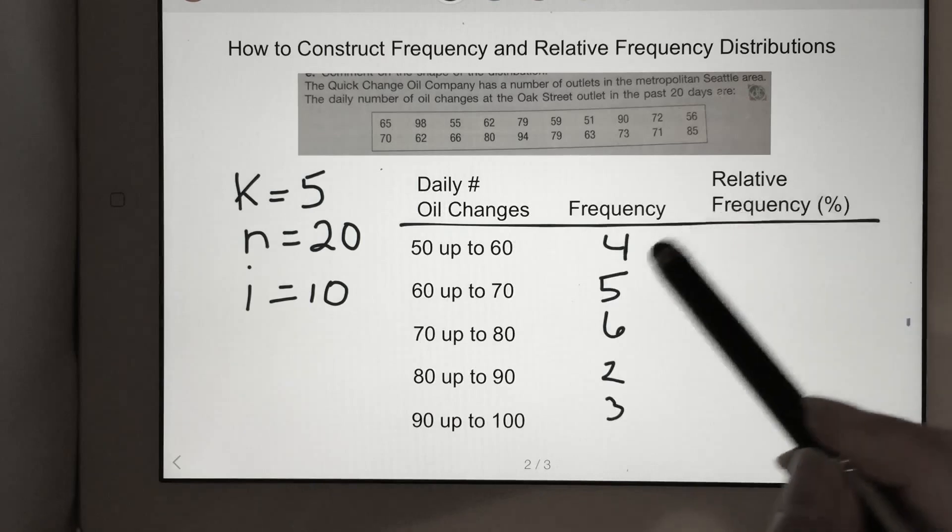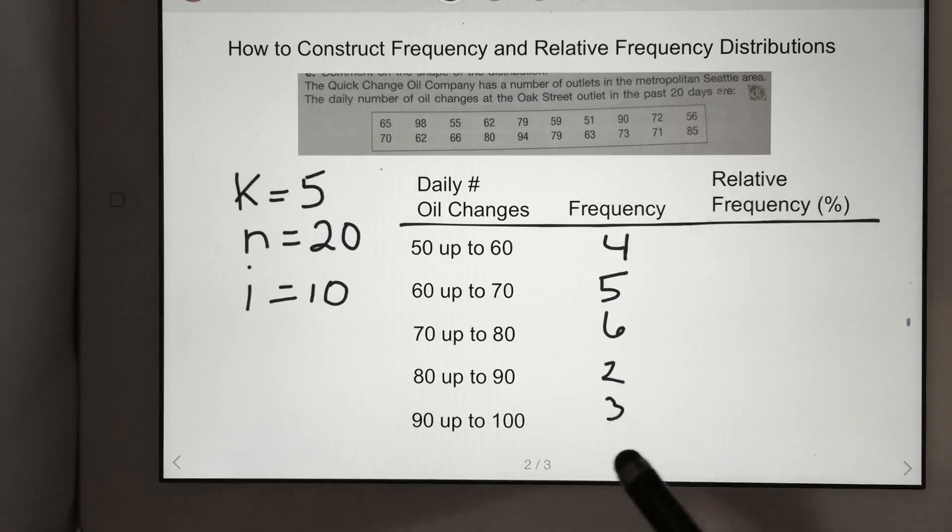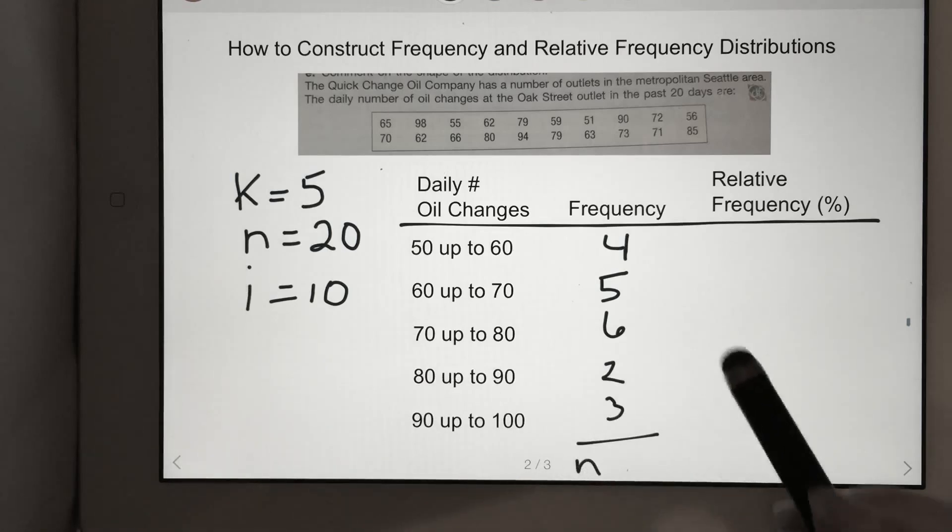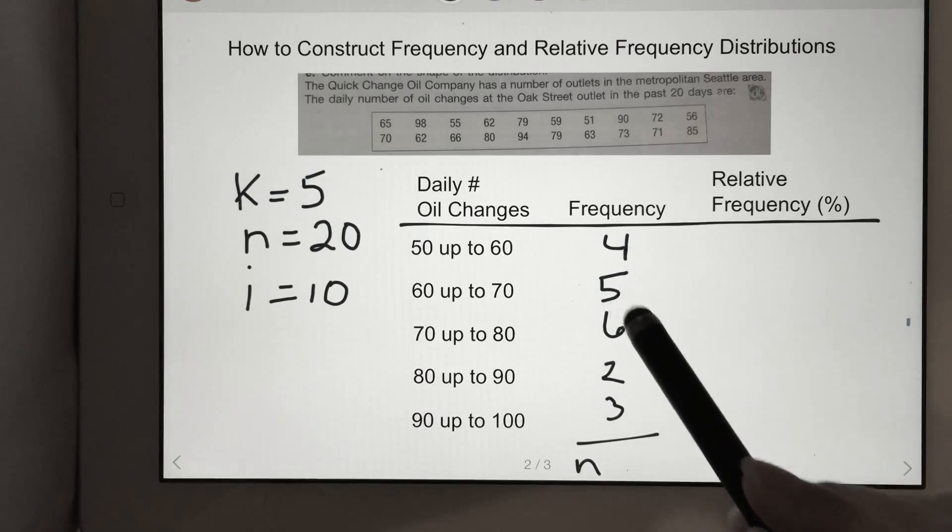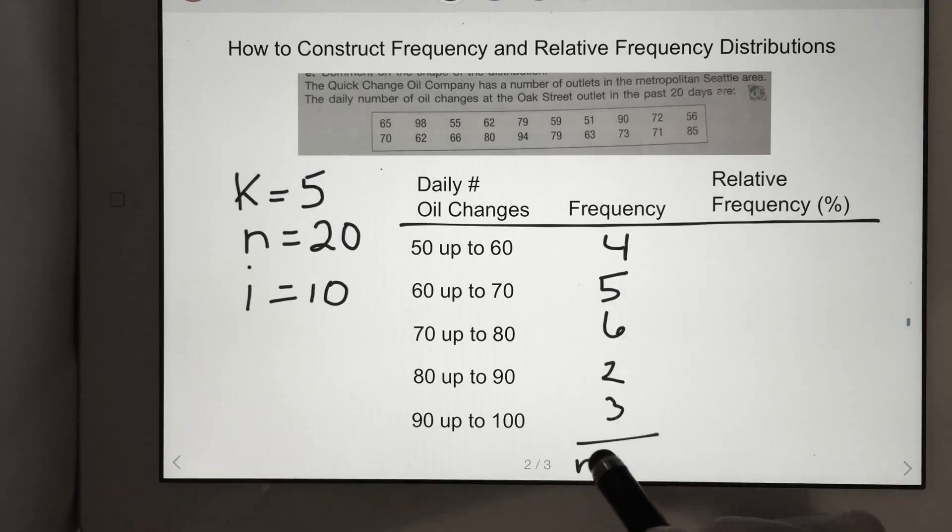Before I do anything else, I want to add up all these numbers and make sure they equal the total number of observations. Yep, it needs to equal 20, and it does.